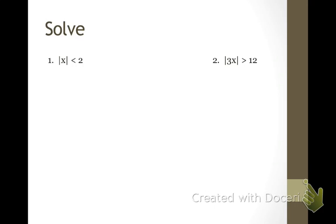In this first one, we have the absolute value alone, everything's ready to go. We're going to break it up into two equations: x is less than 2, and x is greater than negative 2. Whenever you set up the equation with the negative, you flip the sign — so that's different than last time. We don't have anything else to solve because it's already x alone on one side, so we are done at that point.